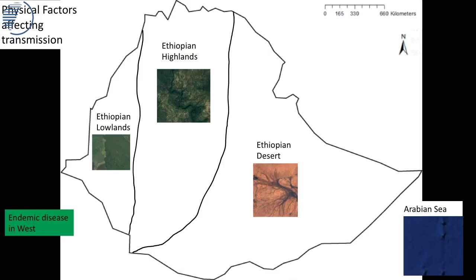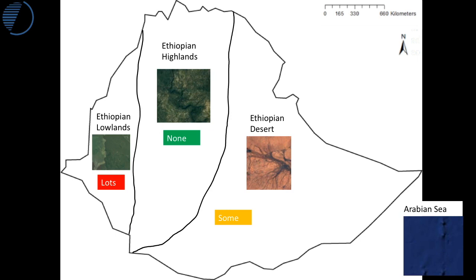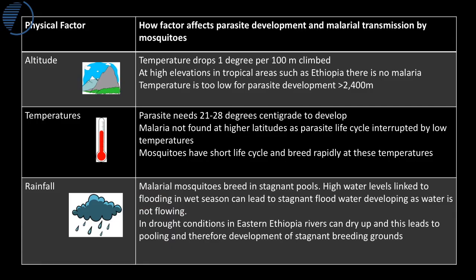For revision, Ethiopia can be simplified into three zones. Zone one: lowland areas with monsoon rain, where there is endemic disease with high rates of parasitic infection in mosquitoes. Zone two: the highland areas, where there is very low or almost no malaria. Zone three: areas with some malaria. This distribution runs from west to east across Ethiopia, determined by three physical factors.